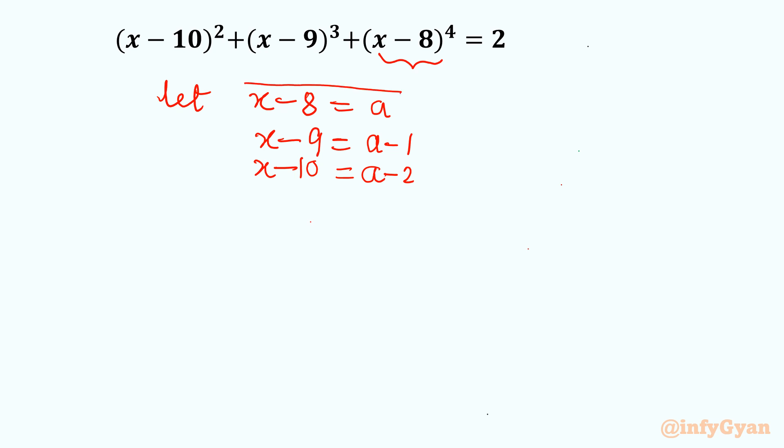Our main substitution is a equals x minus 8. Let us put back this value in the original equation so that it will form in a. So x minus 10 is a minus 2, I will write (a-2) whole square, plus x minus 9 is a minus 1, so (a-1) whole cube, plus x minus 8 is original substitution, so a power 4 equal to 2.